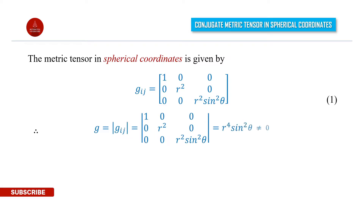Therefore, g equal to determinant of gij equal to the determinant of the diagonal matrix with entries 1, r square, and r square sin square theta, which is equal to r to the power 4 sin square theta, and this is not equal to 0.